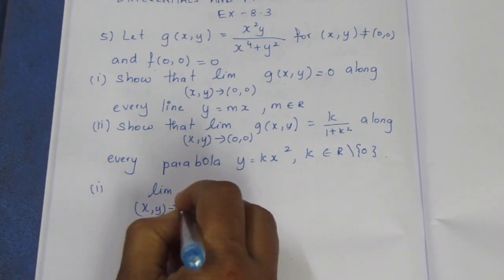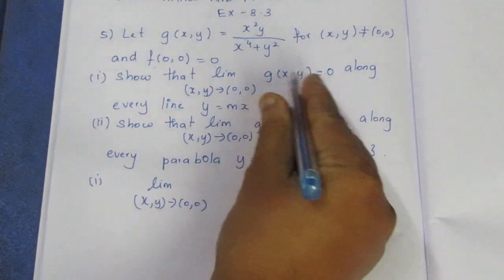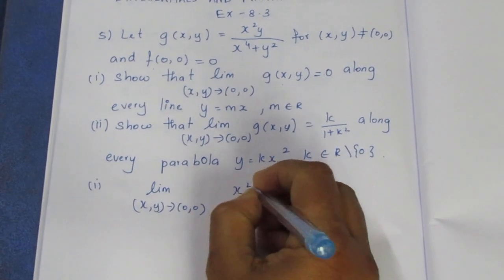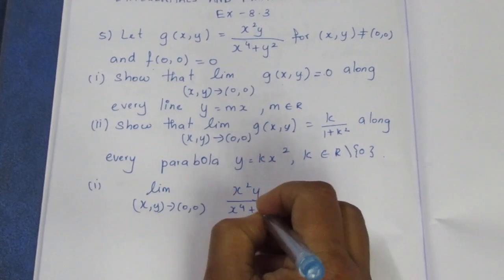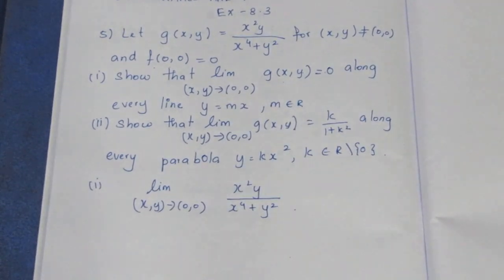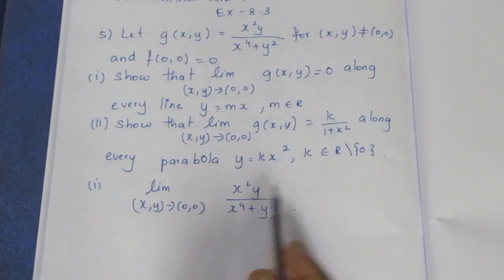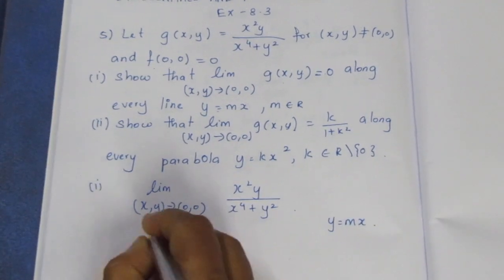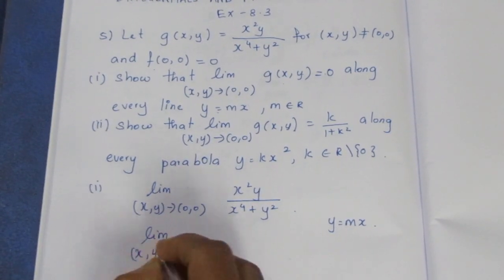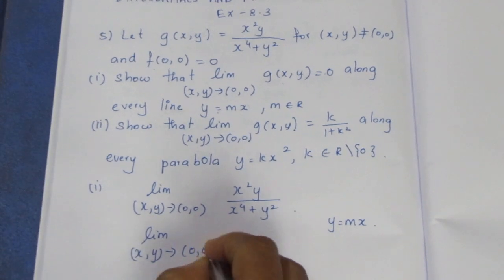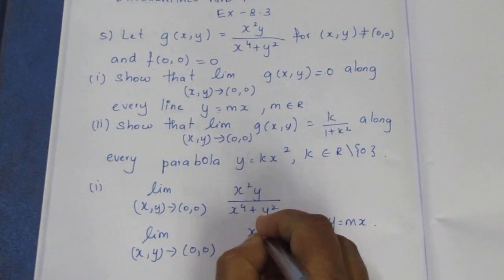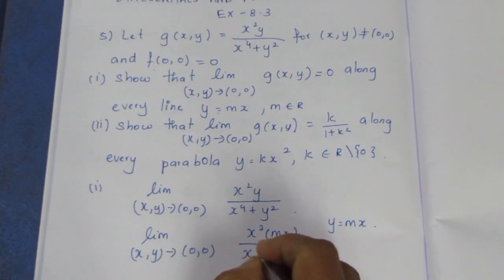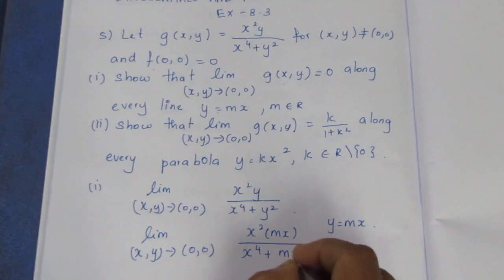The limit as (x,y) tends to (0,0) of x squared y divided by x to the power 4 plus y squared. Substituting y equal to mx, we get: x squared times mx divided by x to the power 4 plus (mx) squared.